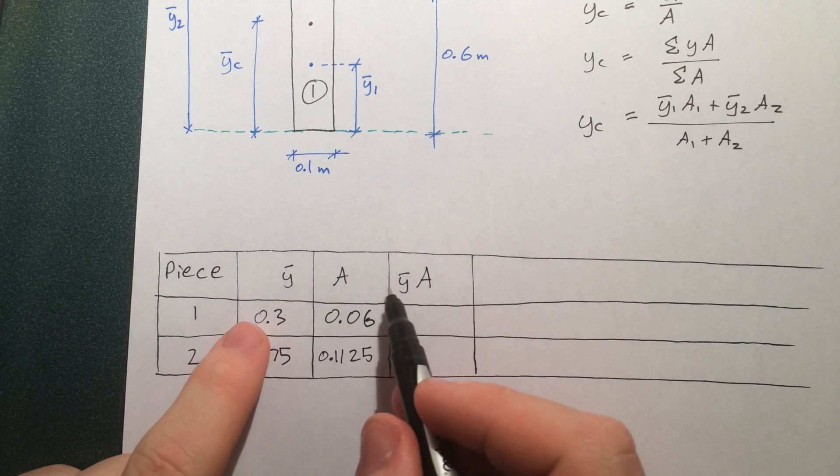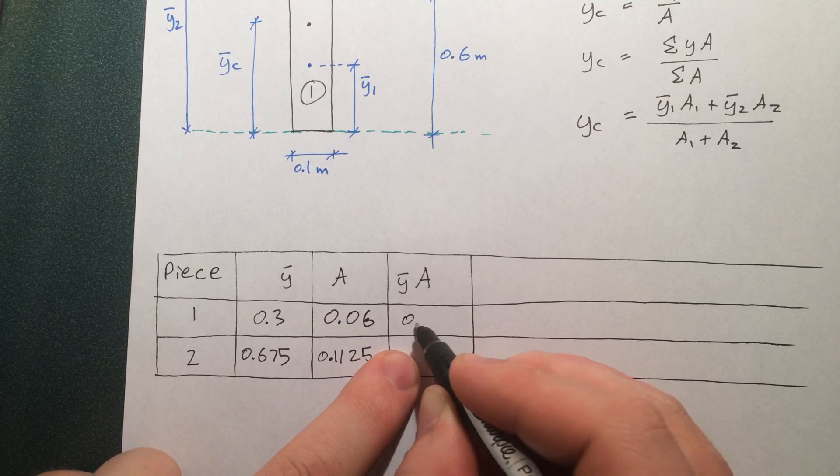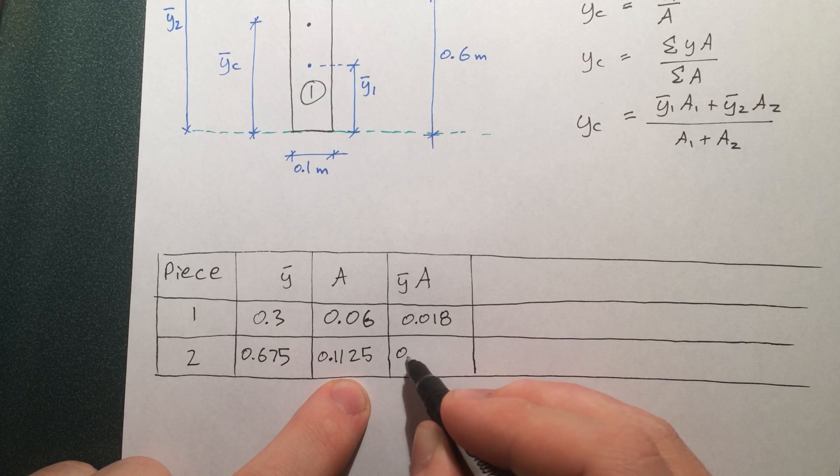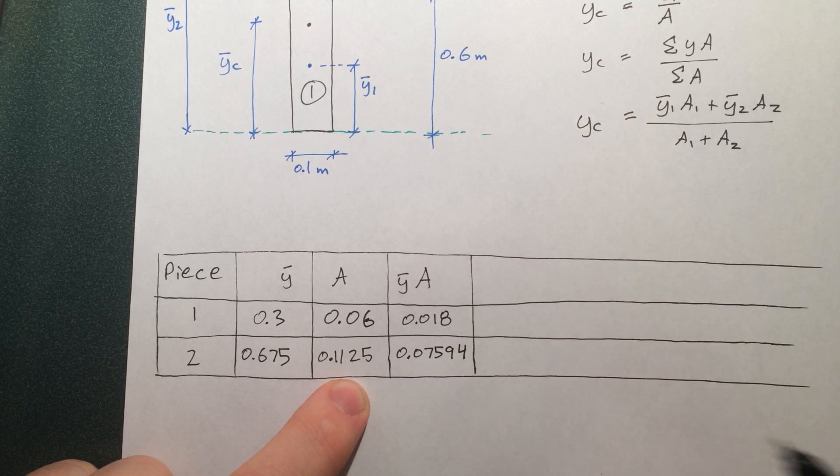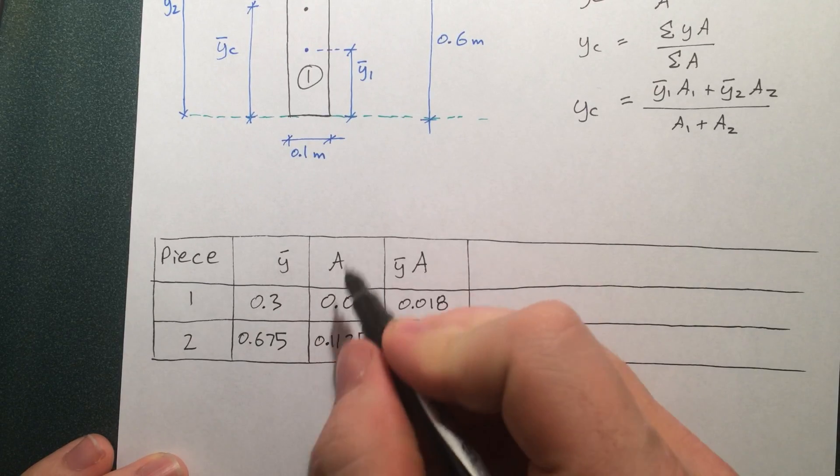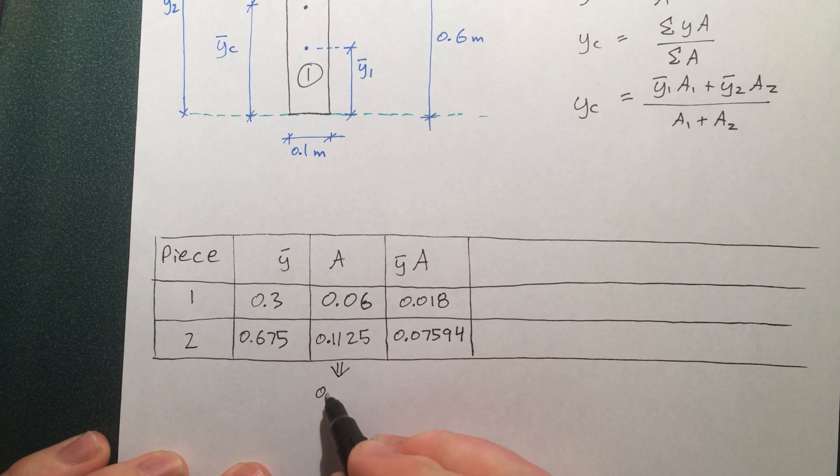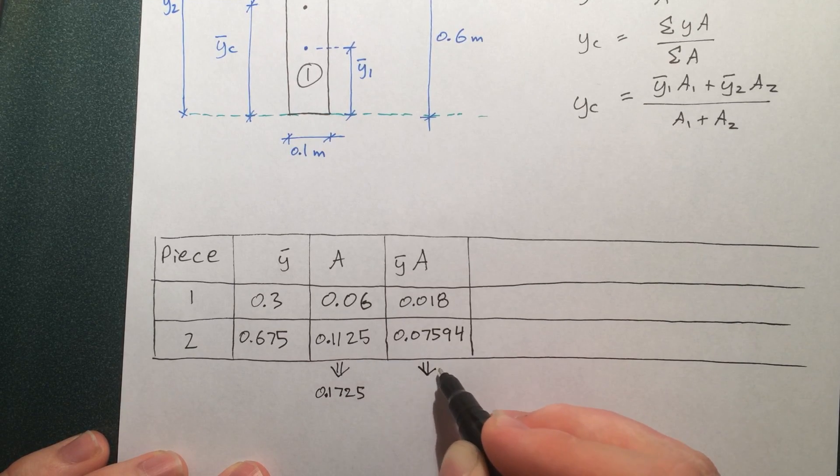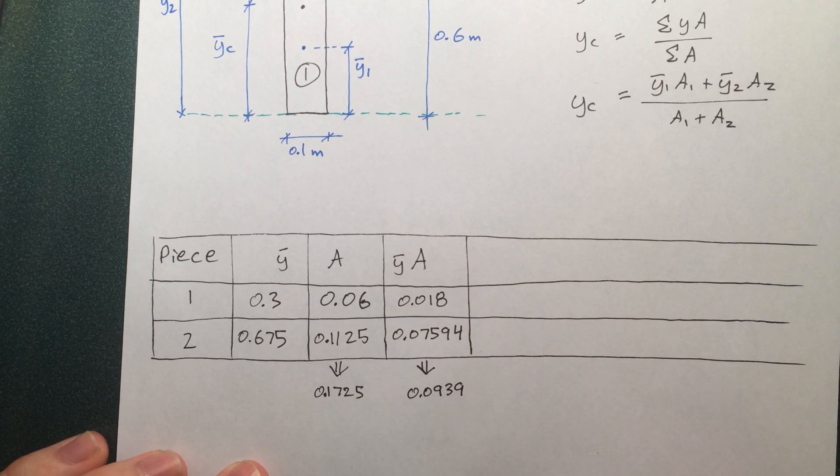The y-bar times A is this times this. See how this makes this easy. This times this. So the total area, we add these up.